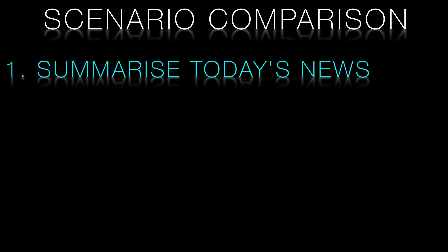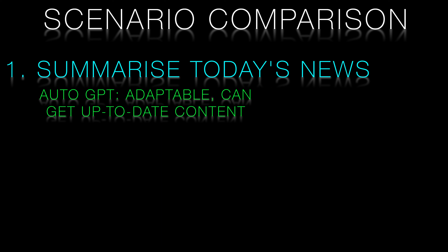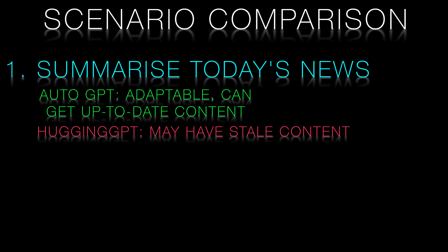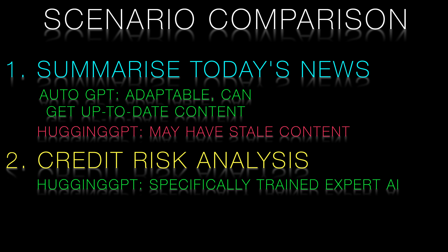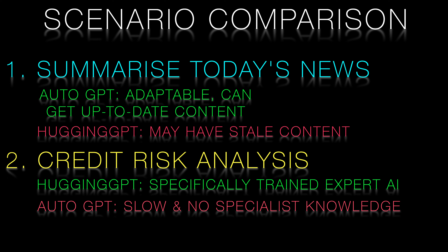Let's look at two tasks where one model excels over the other. For a task like summarizing recent news articles, Auto-GPT would be a better fit due to its adaptability and its ability to learn from a few new examples. This helps Auto-GPT understand the context and generate accurate summaries. In contrast, Hugging-GPT would be a better choice for a task like credit risk analysis, as its expert models can be specifically trained and tuned for this purpose and can provide fast and accurate assessments.